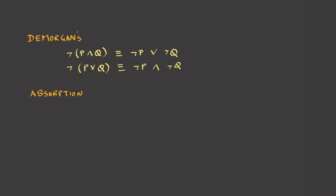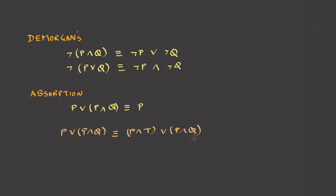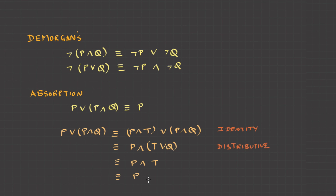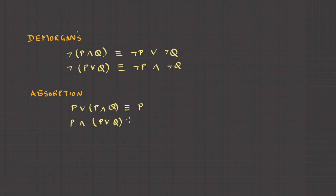The second important one is the absorption law: P OR (P AND Q) is equivalent to P. This has to be registered in our brain, so let's try to derive this. P OR (P AND Q) can be written as (P AND true) OR (P AND Q) using the identity law. That equals P AND (true OR Q) by distributive law. We already know true OR Q is always true, so P AND true is P. That proves the absorption law. Similarly, P AND (P OR Q) is also equivalent to P.